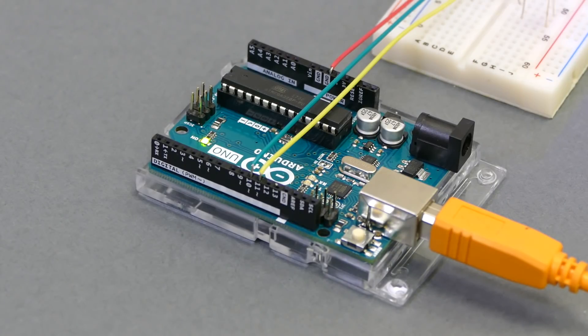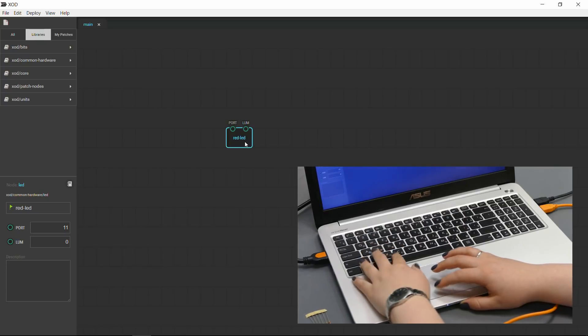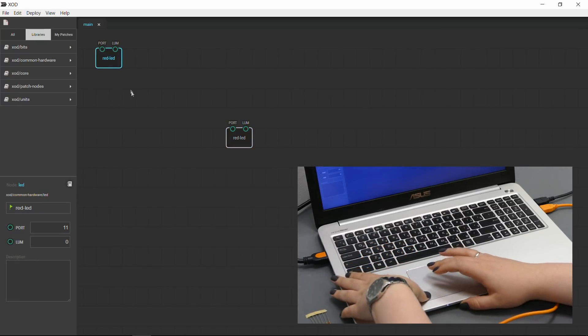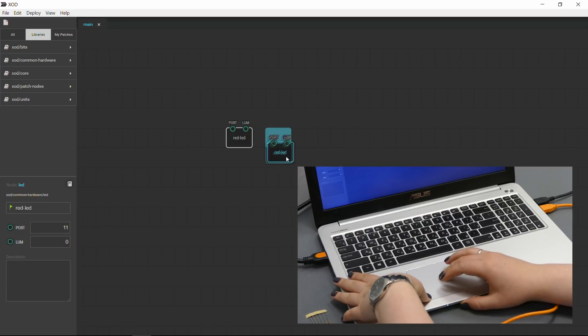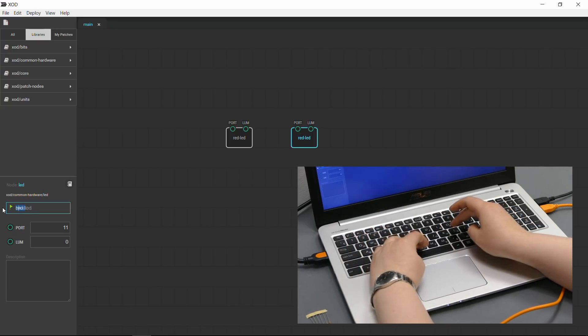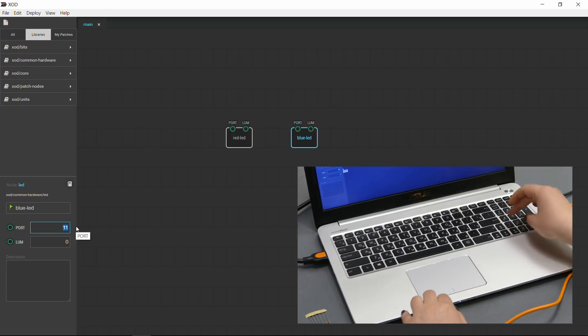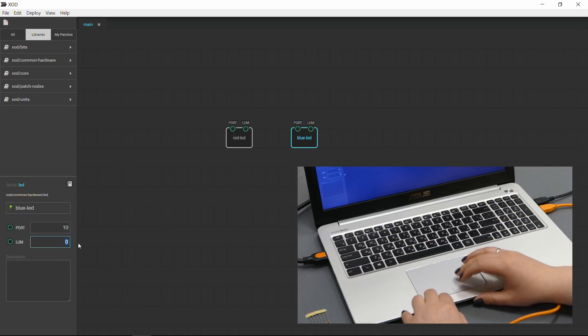We're gonna use pin 10 for the blue LED. Okay. And there we have it. So now what we're gonna do is let's just go ahead and update our software. Give it a name. Call it blue LED. And you can do this with pretty much every node that you can find in the Zode library. Rename it just for good practices. It's on port 10. And let's make this half bright.